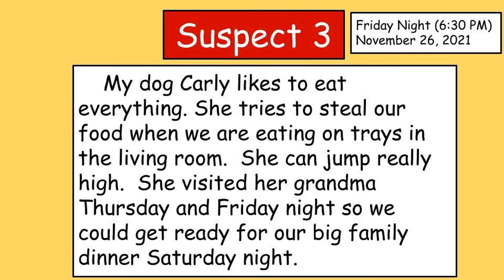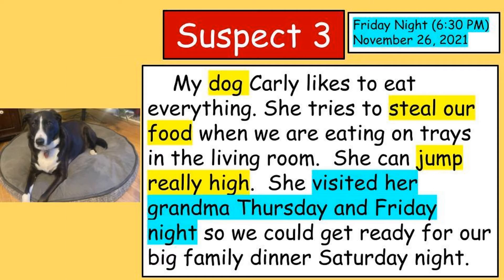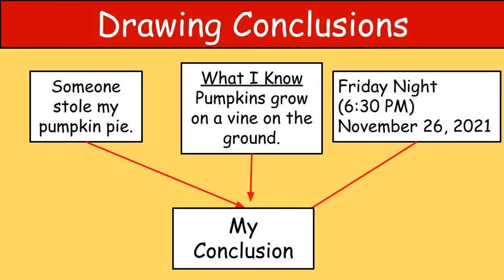Let's check out suspect number three. My dog Carly likes to eat everything. She tries to steal our food and she can jump really high. She's visiting her grandma Thursday and Friday so we can get ready for our big family dinner Saturday night. Do you think Carly could have taken the pumpkin pie? Carly looks awfully suspicious — she's a dog that likes to steal food and can jump really high, so she could have easily jumped up on the table and grabbed the pumpkin pie. But when I read the text again, I noticed another piece of evidence: Carly visited her grandma Thursday and Friday night, and the crime happened on Friday night at 6:30. She was at her grandma's house, so there's no way she could have done it. The crime occurred on Friday night at 6:30 p.m. on November 26, 2021.